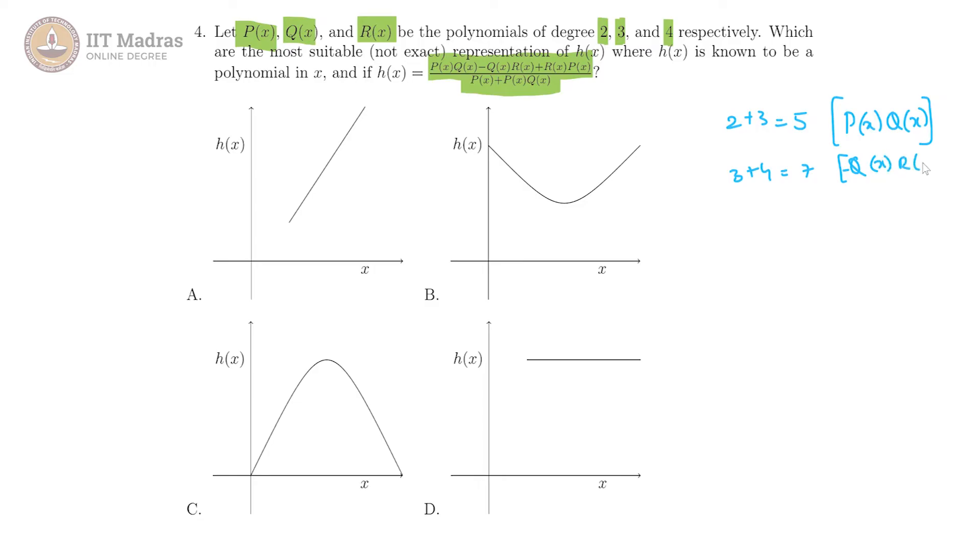This is for minus q of x into r of x and then r of x into p of x gives 2 plus 4 is equal to 6. This is r of x into p of x degree and in the denominator p of x anyway has degree of 2 and p of x into q of x we have seen has degree of 5.